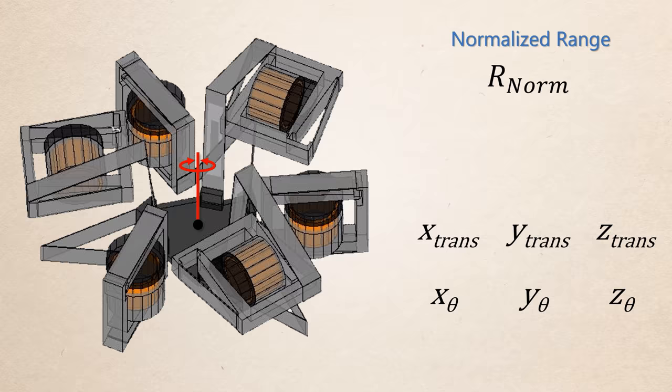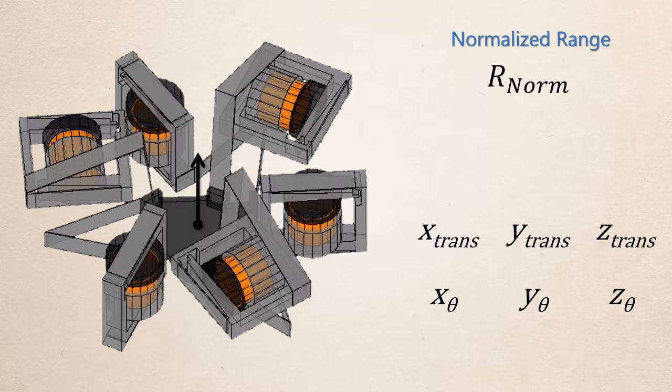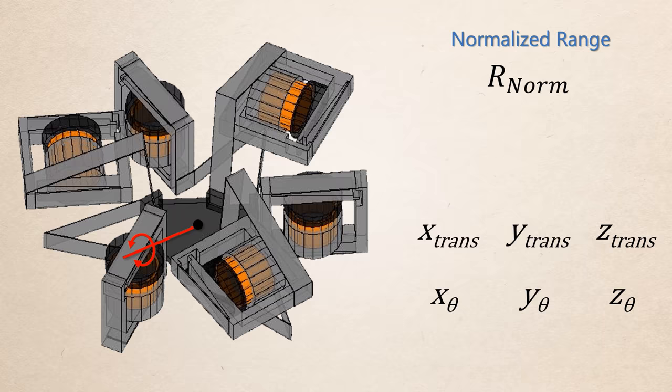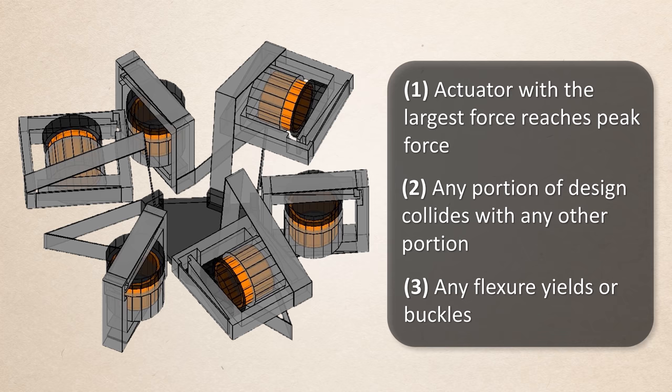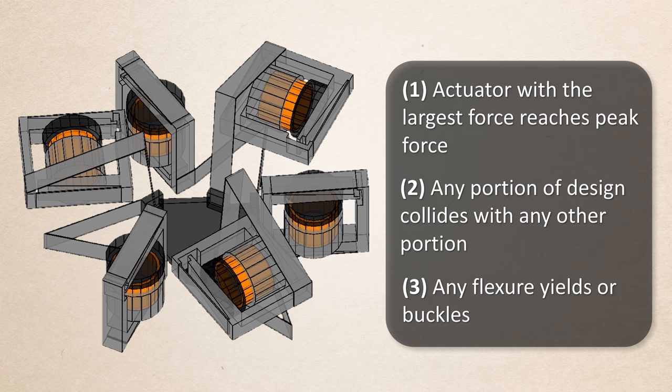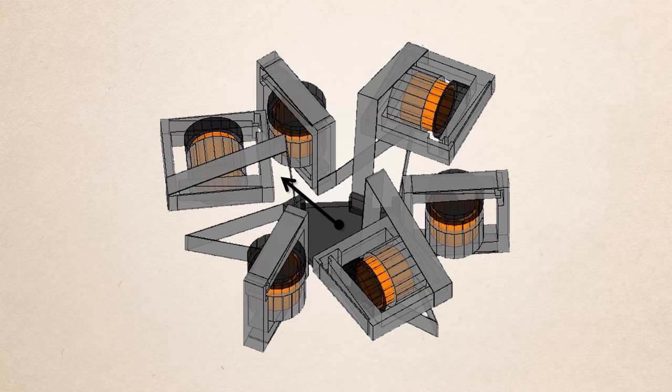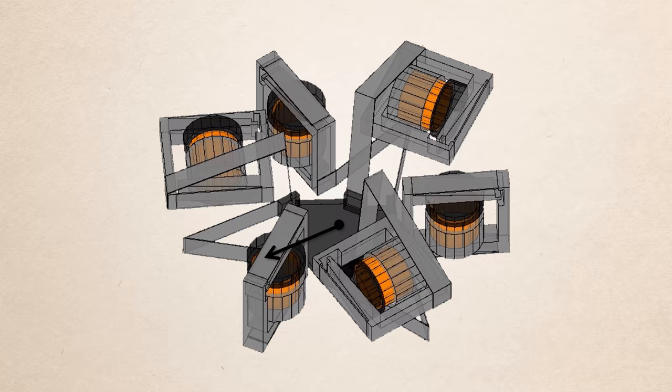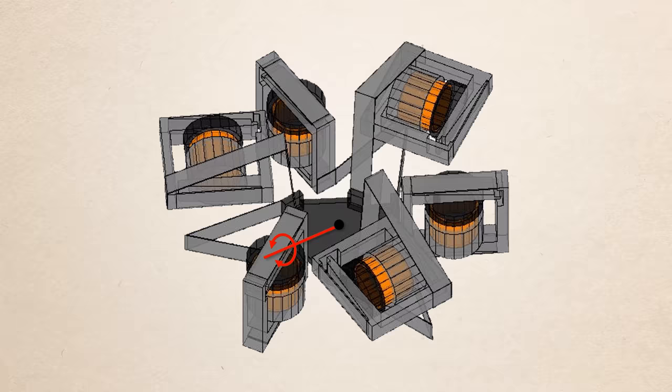The three translations, x-trans, y-trans, and z-trans, and the three rotations, x-theta, y-theta, and z-theta. These individual ranges are each calculated using the design's stiffness matrix to determine the six actuators' force magnitude ratio that drives the system's stage along the desired axis. The ratio's force magnitude multiplier is then increased until: 1. The actuator with the largest force either reaches its peak force, or 2. Any portion of the design collides with any other portion of the design, or 3. Any of the flexure elements yield or buckle. The resulting displacement is then recorded and the same process is repeated to drive the system's stage along the same axis but in the opposite direction. The absolute values of both direction displacements are then summed together to produce the maximum displacement desired along the particular axis of interest.